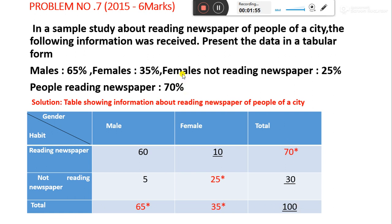They have given female not reading newspaper as 25%. So in the female column, not reading newspaper is 25% — that is given data. Total female is 35%. So 35% total female minus 25% not reading newspaper gives us 10% female who do read the newspaper.